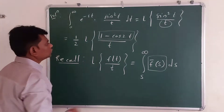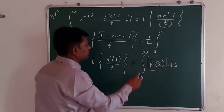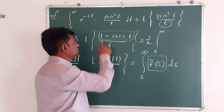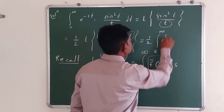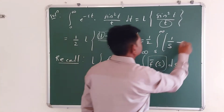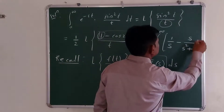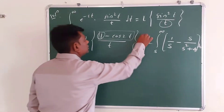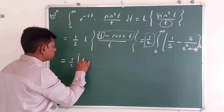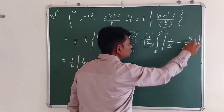So this equals one half, times the integral from s to infinity, where f-bar(s) means the Laplace transform of 1 minus cos 2t. The Laplace transform of 1 is 1 over s, minus the Laplace transform of cos 2t which is s over s squared plus 4, ds. Now this half remains, and the integration of 1 over s gives log s, minus the integration of s over s squared plus 4.